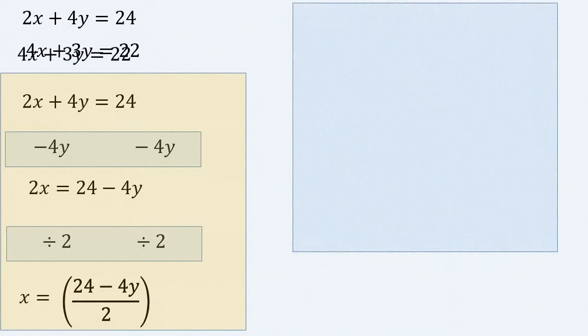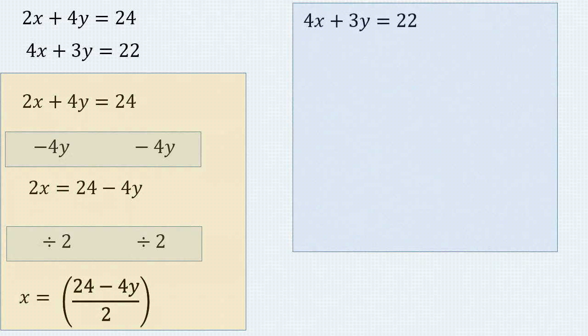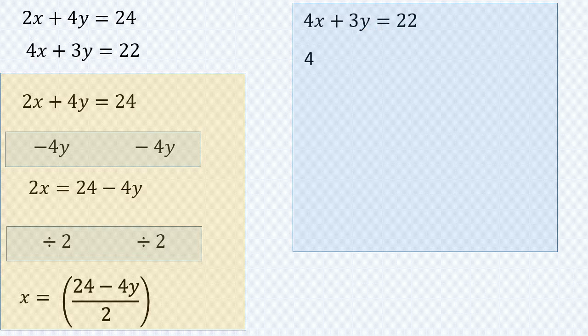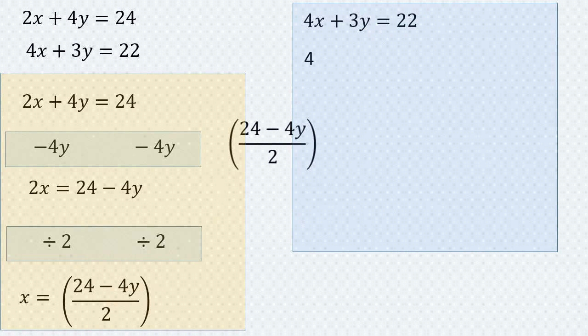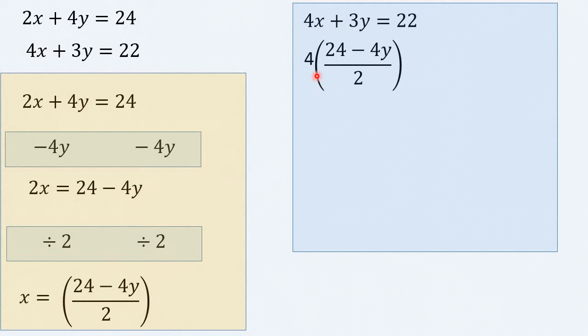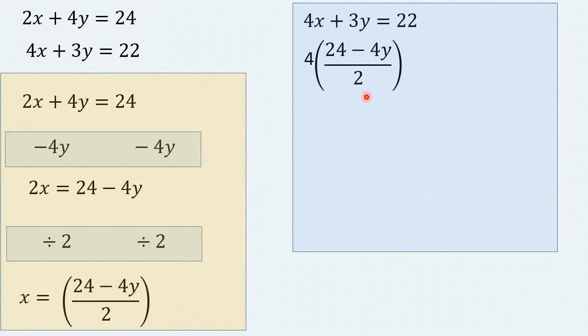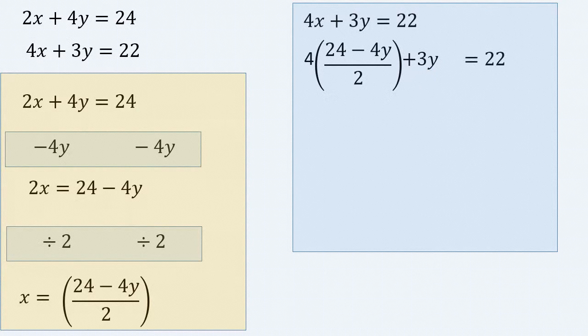We turn now to the second equation, 4x plus 3y equals 22, and we substitute x with that expression that we have just found. Now if we do this we will have 4 multiplied by the bracket 24 minus 4y all over 2 to substitute for x plus 3y equals 22.